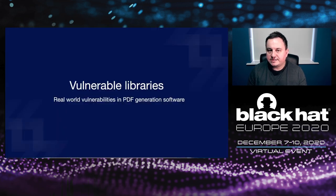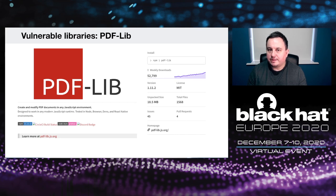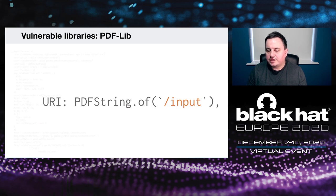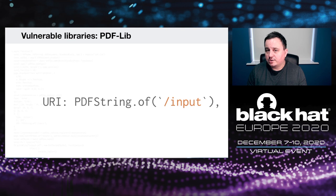The first vulnerable library I found was called pdf-lib — an NPM module that works with Node, getting over 52,000 weekly downloads. They made a pretty huge mistake. Here's the JavaScript to construct a PDF — you create an annotation, and that annotation has a helper called PDFString.of. The URI property uses this function and your input lands inside it. You can inject a parenthesis to break out of that annotation URI stream and inject your own PDF code.